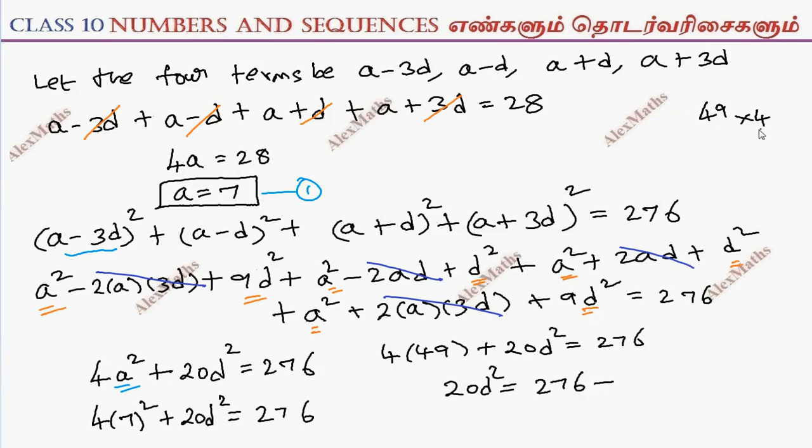Substituting a equals 7: 4 times 49 equals 196 plus 20d square equals 276. So 20d square equals 276 minus 196, which is 80.